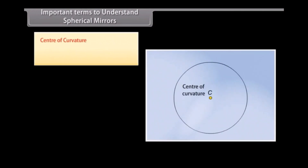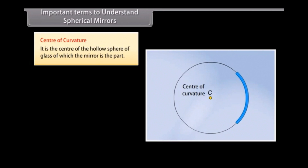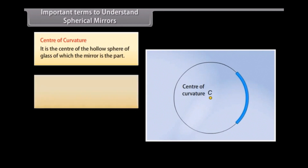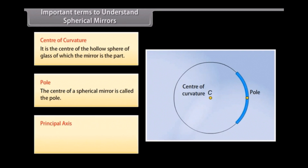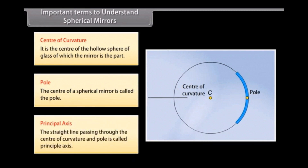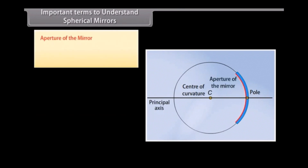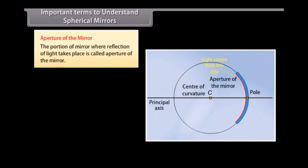Important terms to understand spherical mirrors: The center of curvature is the center of the hollow sphere of glass of which the mirror is a part. The pole is the center of a spherical mirror. The principal axis is the straight line passing through the center of curvature and the pole. The aperture of the mirror is the portion of the mirror where reflection of light takes place.